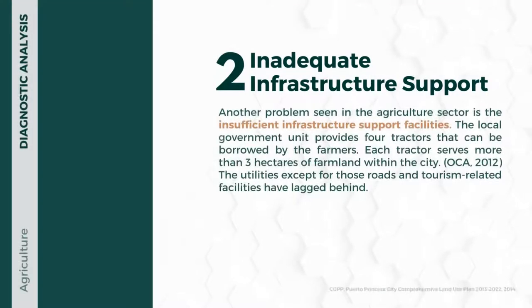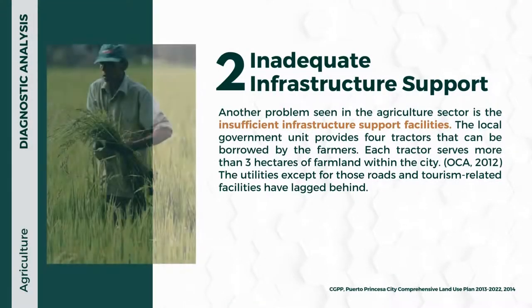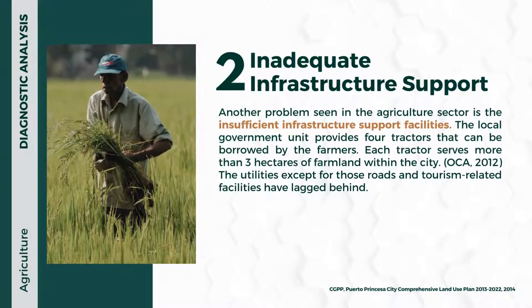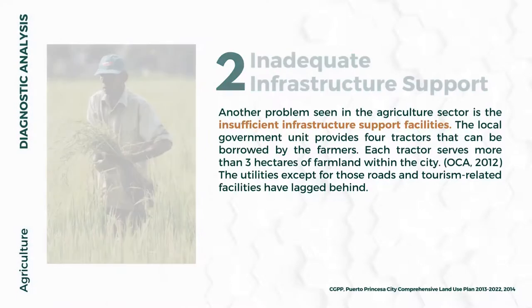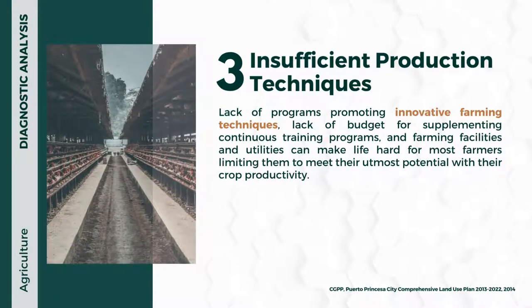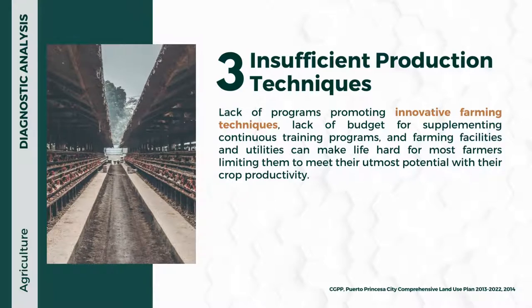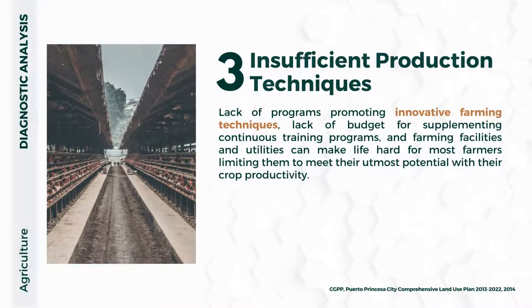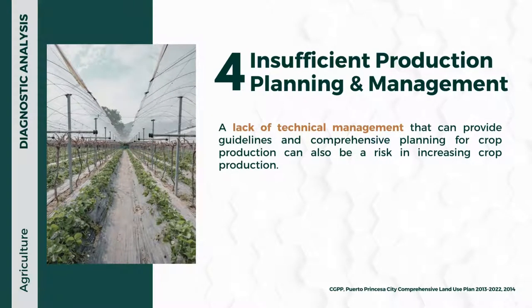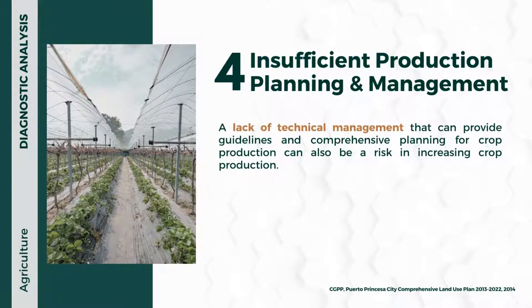Insufficient infrastructure support facilities in the city's agricultural sector limits the potential of the city and its farmers to increase production. Insufficient production techniques due to lack of programs promoting innovative farming techniques and insufficient budget for continuous training programs limits farmers from meeting their utmost potential. Insufficient production planning and management — a lack of technical management providing guidelines and comprehensive planning for crop production — can also be a risk to increasing production.